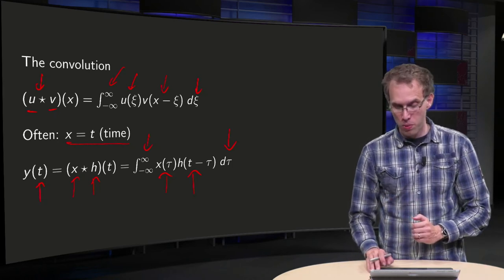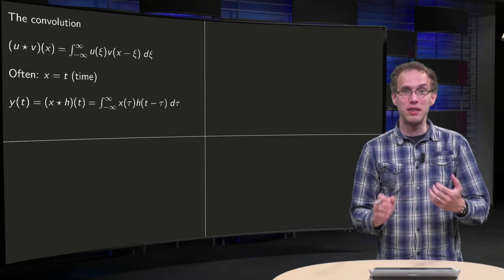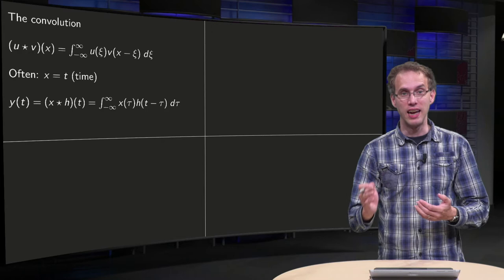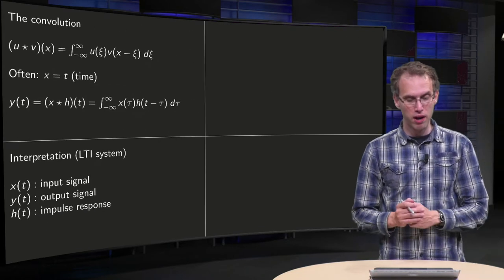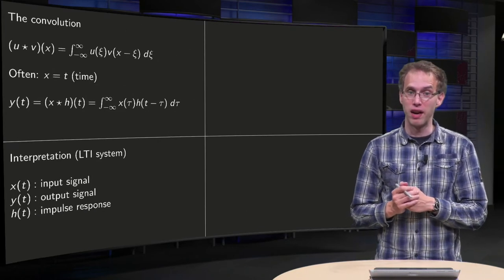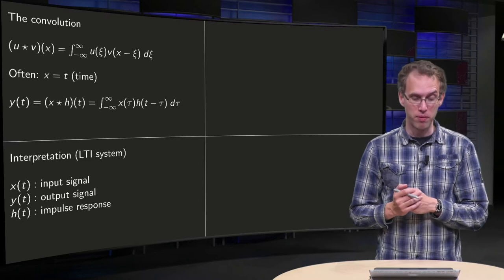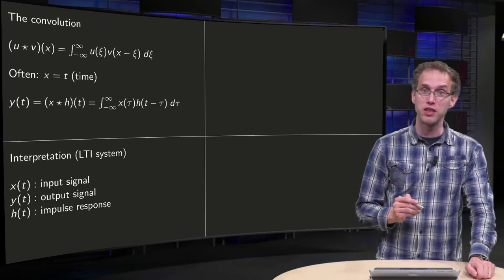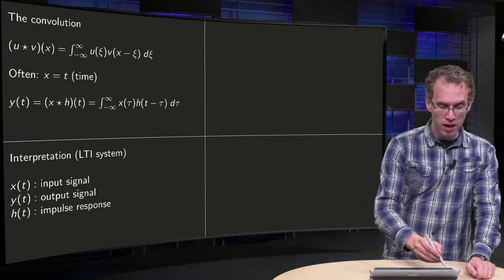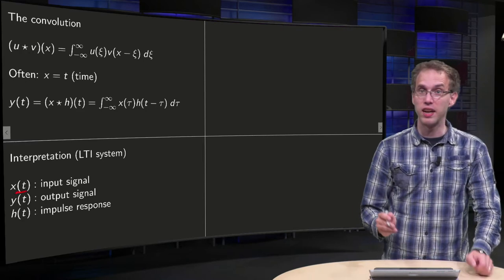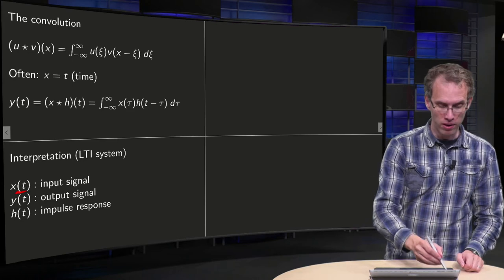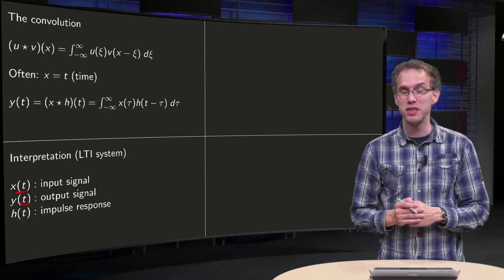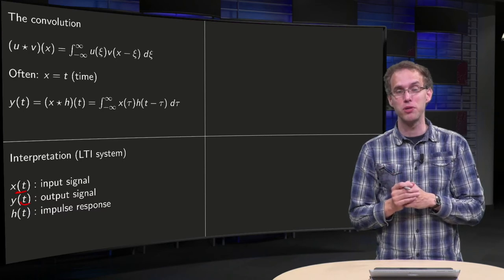So what can such a convolution mean? That depends of course on the interpretation of inputs like x and h and y. For example, if you have LTIs, the time invariant systems, then it can be interpreted as follows. Your x of t is an input signal, and your y of t is your output signal, and what is then your h of t. Now h of t is an impulse response,